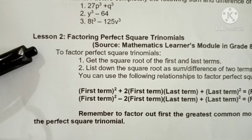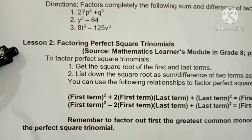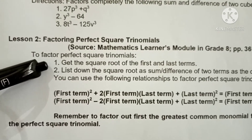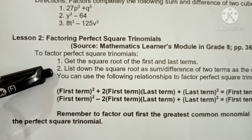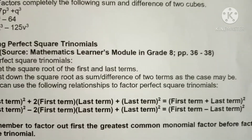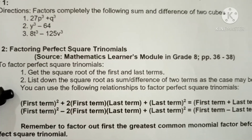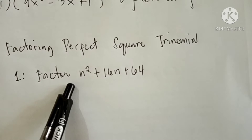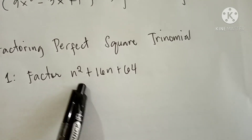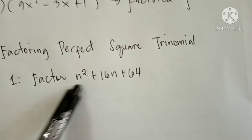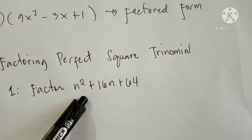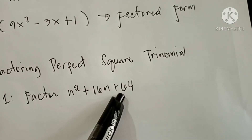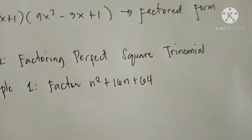Now we're going to proceed to Lesson 2: factoring perfect square trinomials. To factor perfect square trinomials, number 1: get the square root of the first and last terms; list down the square root as a sum or difference of two terms as the case may be. You can use the following relationships to factor perfect square trinomials. A trinomial is called a perfect square trinomial when all three terms have exact square roots.